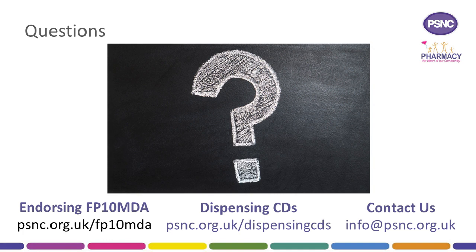Do we need to use a private PCD form to prescribe Schedule 4 and 5 CDs? The FP10PCD form is intended for Schedule 2 and 3 CDs only; it may be counterproductive to use such stationery for Schedule 4 or 5 CDs, in which case the prescriber should use ordinary stationery to prescribe non-Schedule 2 and 3 CDs. Where do you get your private CD account number from? You get that from your NHS local England area team — you need to contact them to get the account number for your pharmacy.